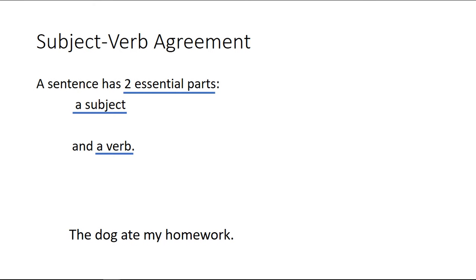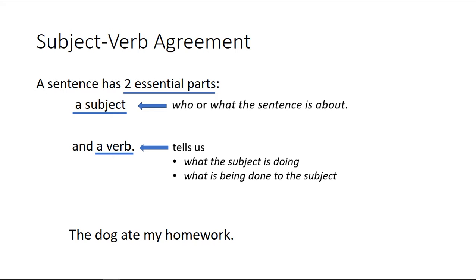A sentence has two essential parts, a subject and a verb. What's a subject? It's who or what the sentence is about. And a verb tells us what the subject is doing or what is being done to the subject. So in our simple example here, identifying the subject as the dog and the verb ate. The dog ate my homework. So we know who is doing the action, performing the action in the sentence and what they are doing.